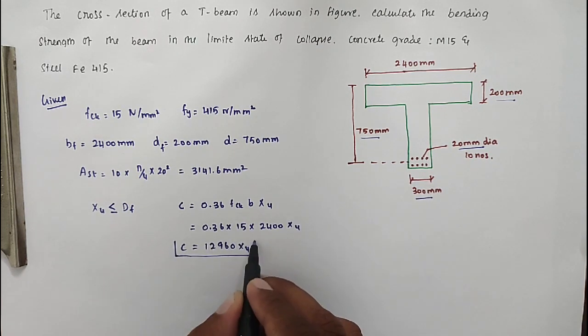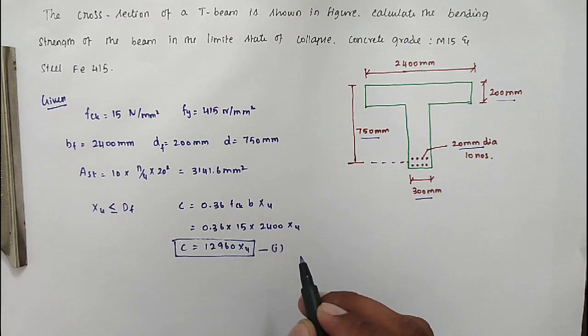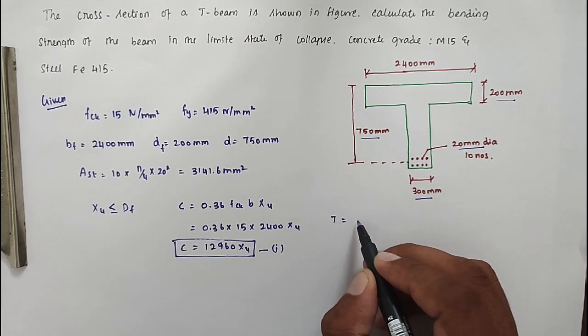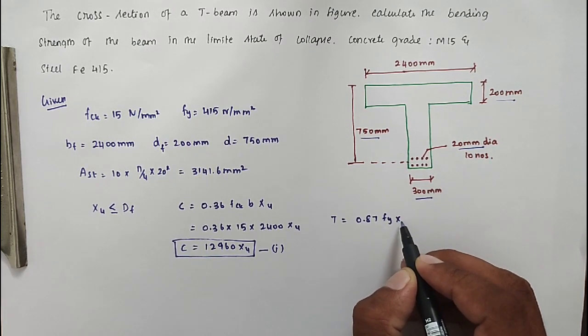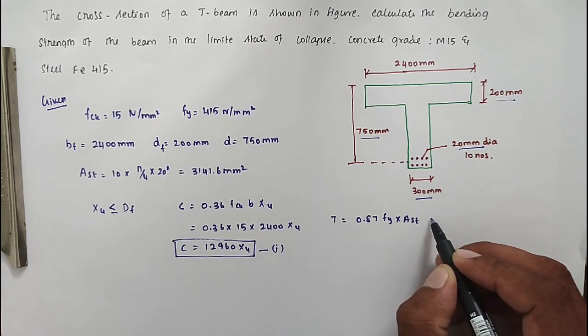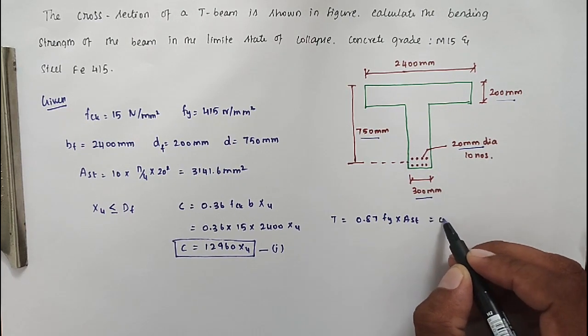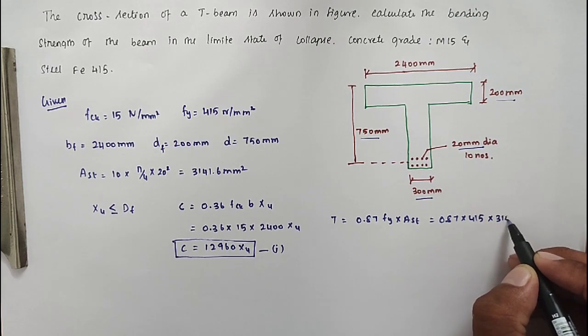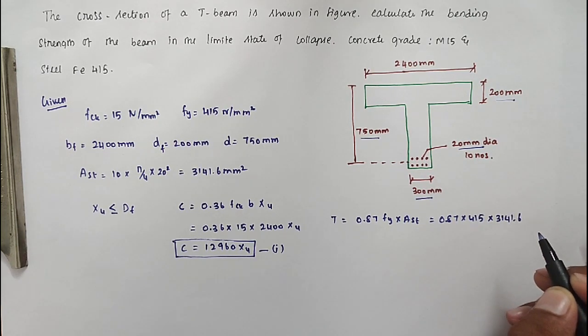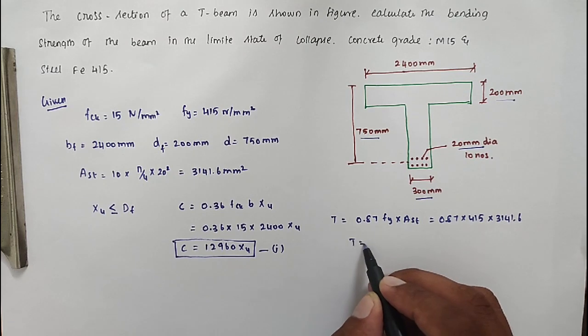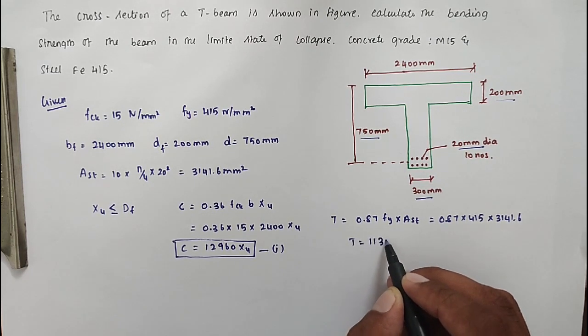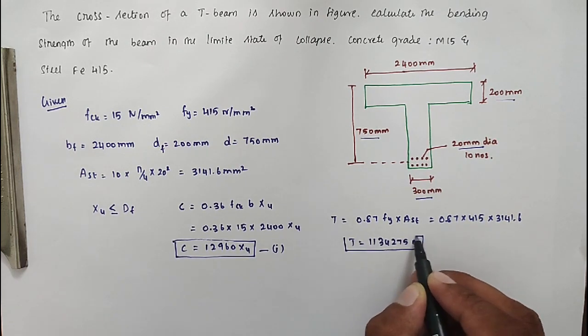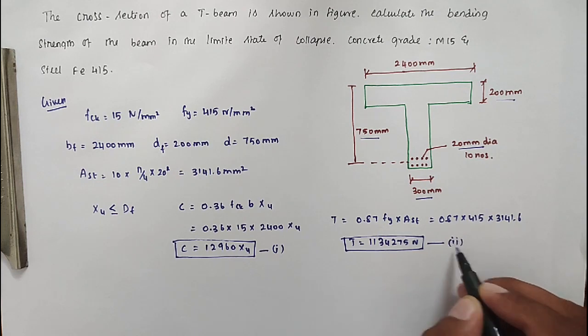Then tension force T equal to 0.87 FY into AST. Substituting all the values: 0.87 into 415 into 3141.6. T equal to 1134275 N. This is equation 2.